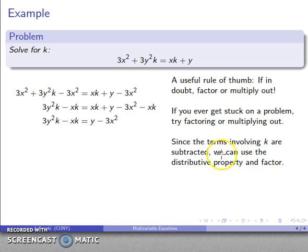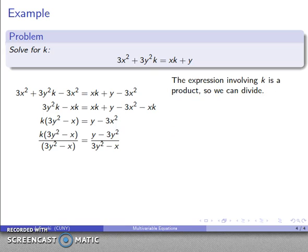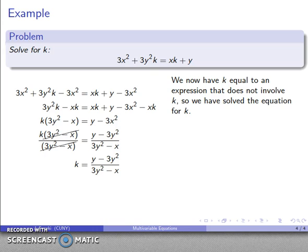Remember, factoring changes an addition or subtraction into a multiplication, and I have a subtraction here, so I can factor. I'll factor a k out, and that gets me this expression there. Now it's clear what's going on. I'm trying to solve for k. I now have k times something that doesn't involve k, so I can divide by it. So I'll divide by that factor, 3y squared minus x, and that will eliminate it from the left-hand side. And I'll have k equal to this expression that does not involve k, so I have solved the equation for k.